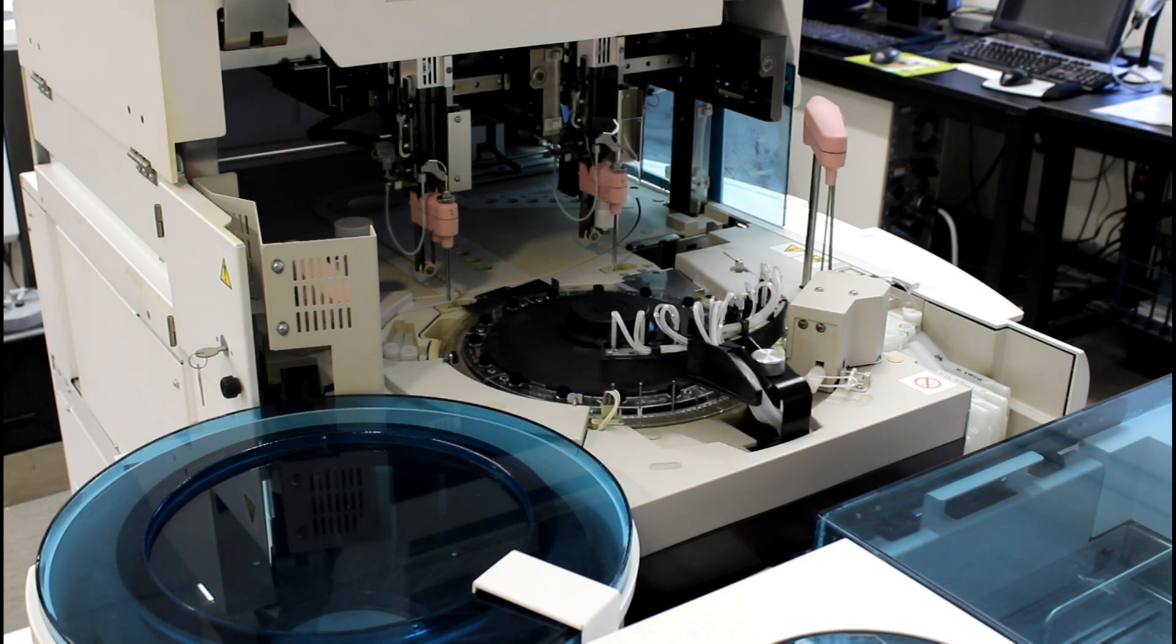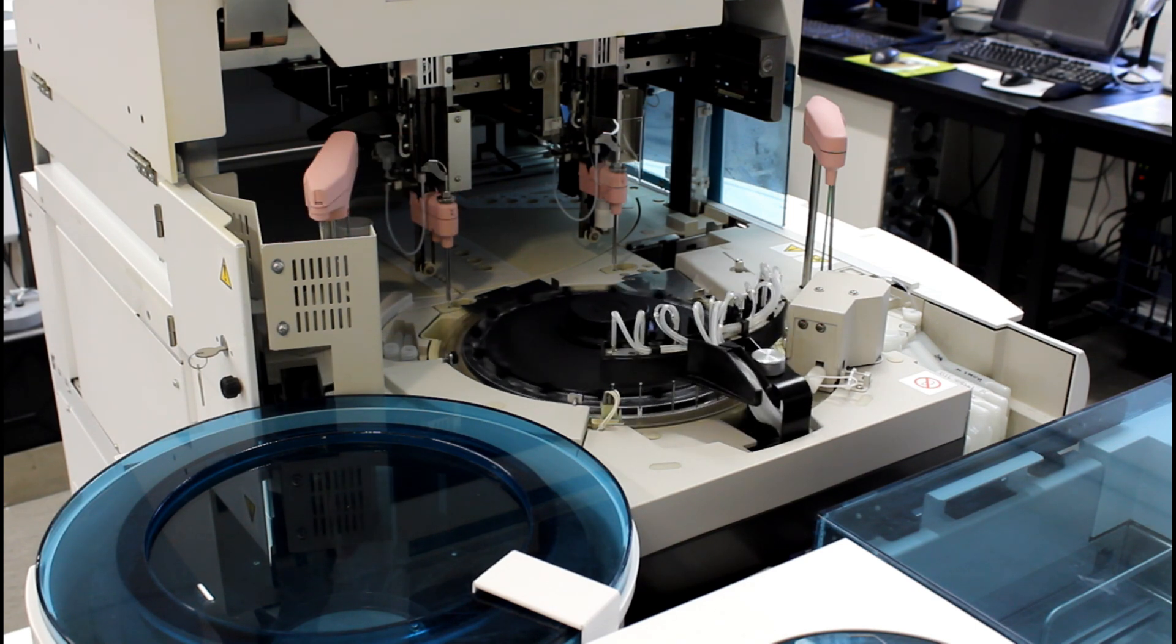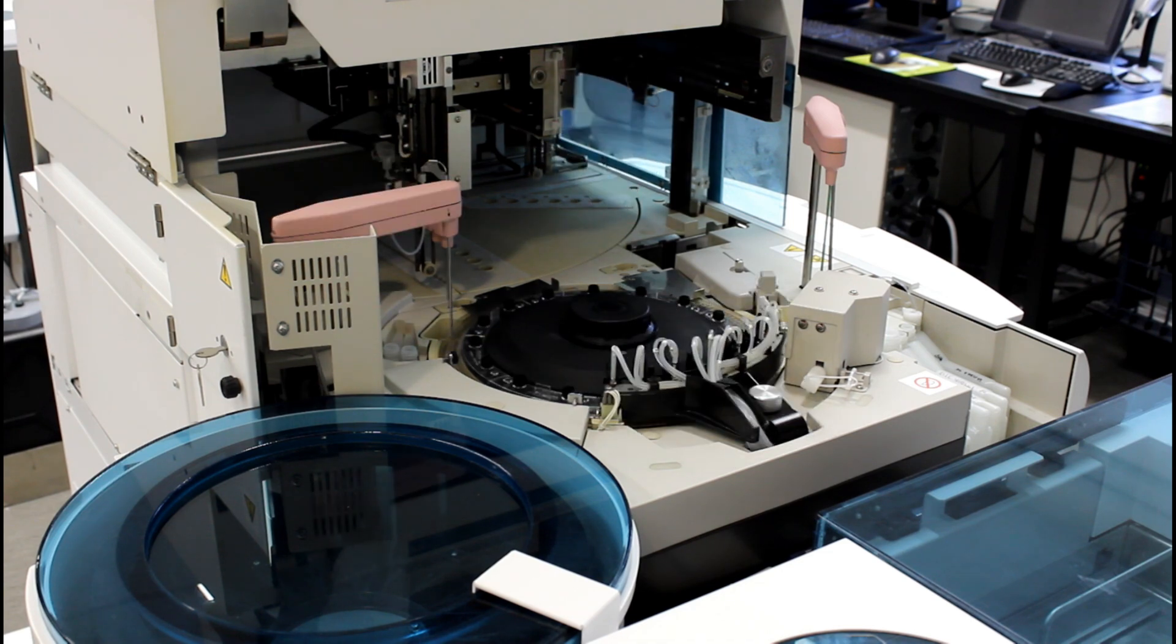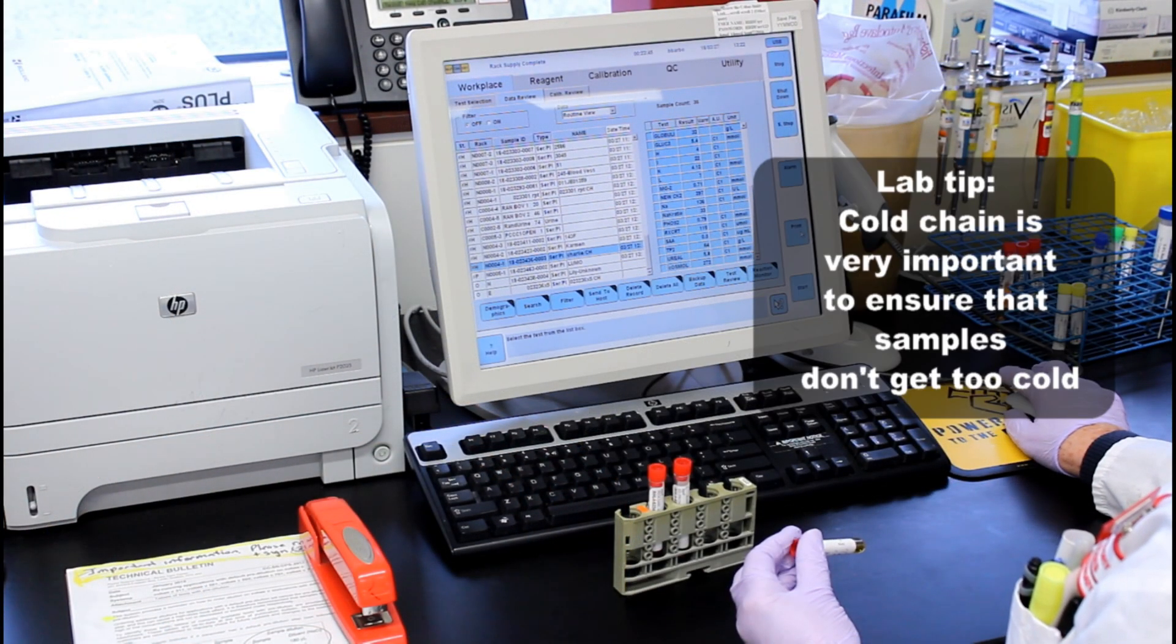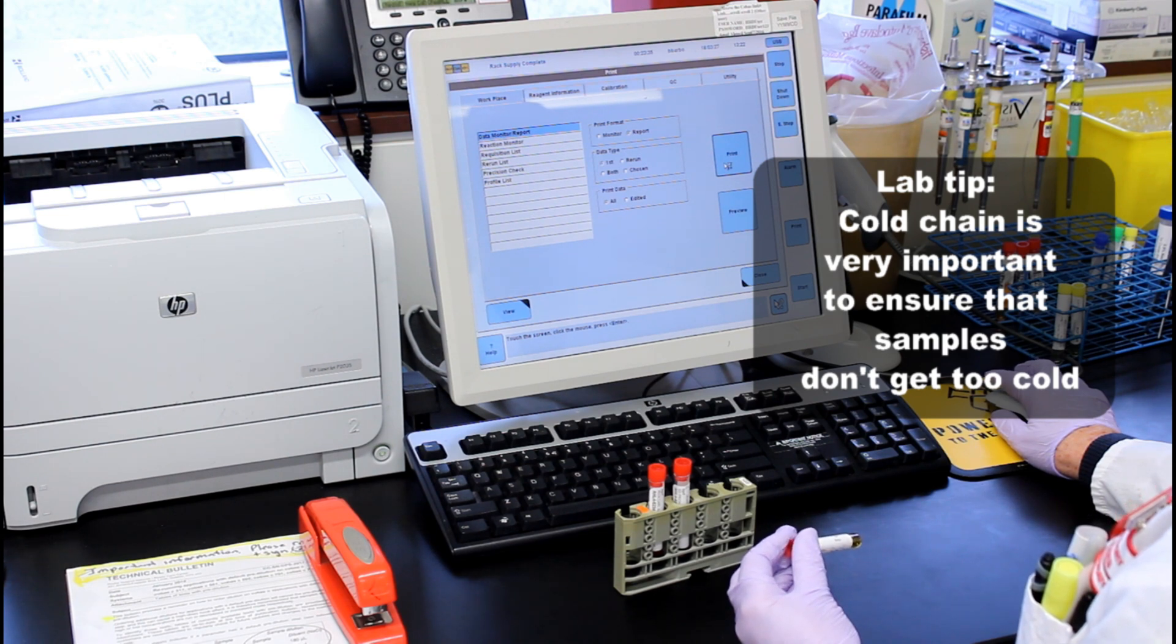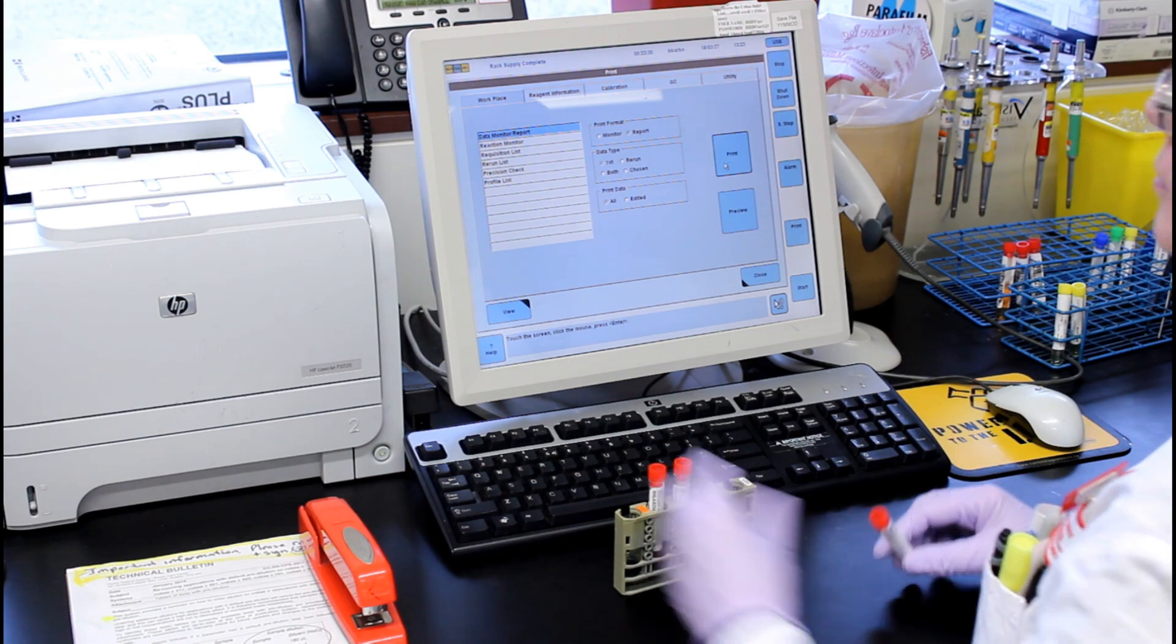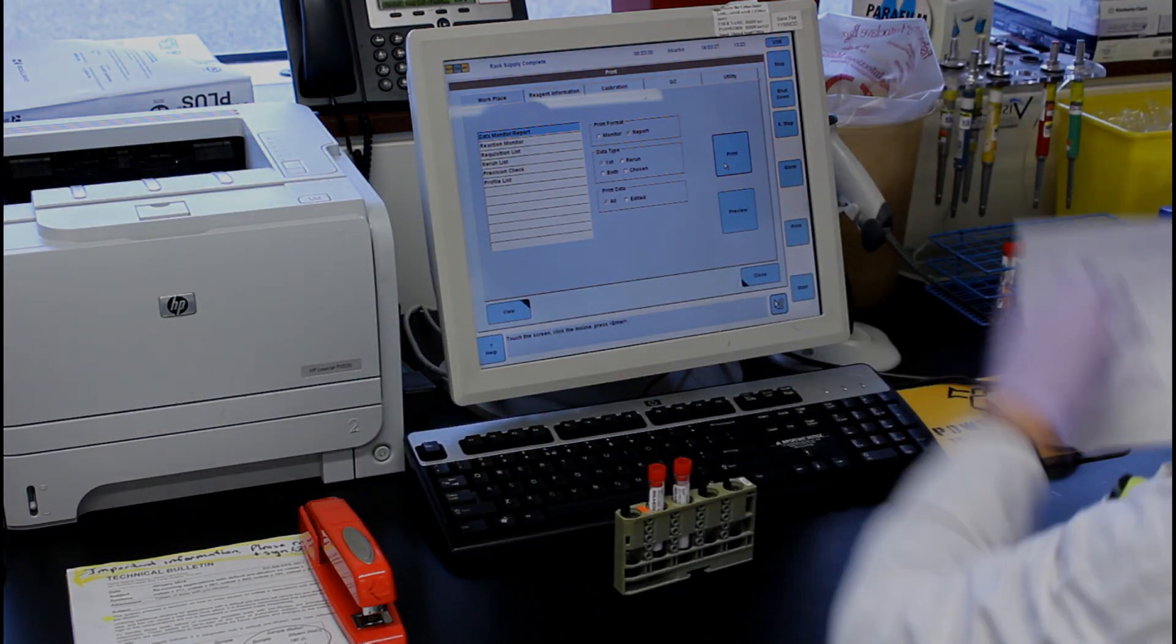This is our biochemistry machine which we can do a large number of samples in a short amount of time. It looks a lot differently than a small in-clinic machine but does the same job. An additional tip to note is that the cold chain is really important as well to make sure that things don't get too cold or too hot. Samples right next to a freezer pack can lead to hemolysis of EDTA blood. Wrap them separately when placing them near freezer packs.